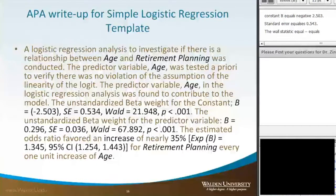The unstandardized beta weight for the predictor variable, beta equals 0.296, standard error equals 0.036, the Wald statistic equals 67.892, and the P value was less than .001.